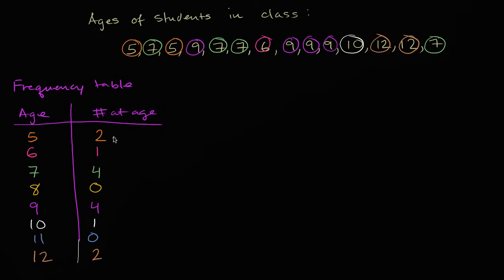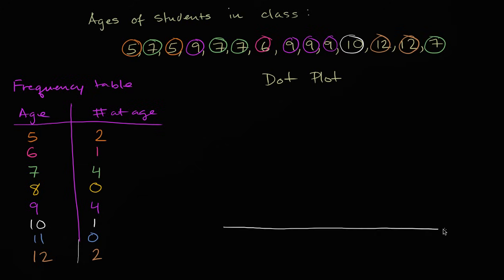Now a way to visually look at a frequency table is a dot plot. Let me draw a dot plot right over here. In a dot plot, we essentially take the same information and show it visually. We have the different age groups along the bottom: five, six, seven, eight, nine, ten, eleven, and twelve.